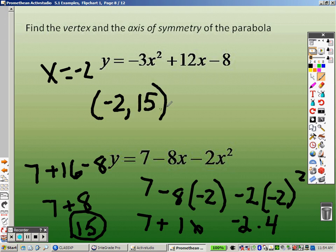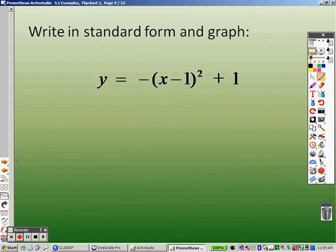So to find my axis of symmetry, it's whatever the x value is. So x equals negative 2 is correct, because that's where the mirror image will be on your graph. And when we come back here, we'll figure out how we can write in standard form.